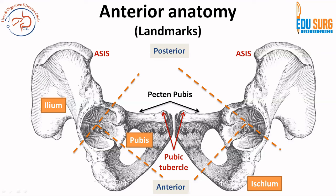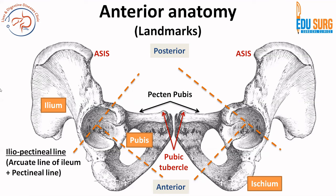The pectineal line goes along the superior pubic ramus and then towards the iliac crest, which is why it is known as the ileopectineal line — that is the pectineal line on the superior pubic ramus continuing on the arcuate line of the ileum. The ligament on it is known as the ileopectineal ligament.